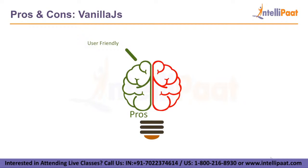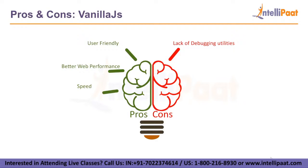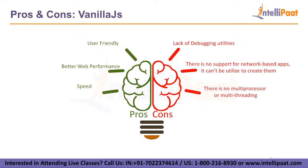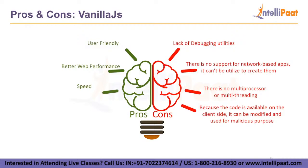Pros and cons of Vanilla.js. Pros: first, user-friendly — Vanilla.js is great for beginners because it is simple to use; second, better web performance — Vanilla.js must be parsed and compiled, and a 30KB Vanilla.js file has a greater impact on web speed than an HTML or CSS file of the same size; third, speed — Vanilla.js does not require any external resources, so its code is executed entirely on the client side, resulting in exceptional performance. Cons: lack of debugging utilities; no support for network-based applications; no multiprocessor or multithreading options; and because the code is available on the client side, it can be modified and used for malicious purposes.